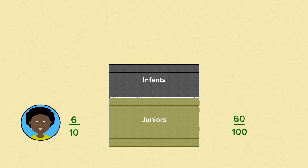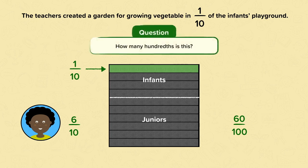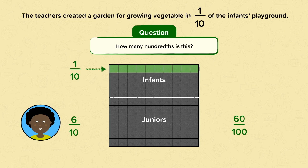Now let's have a look at another problem. The teachers created a garden for growing vegetables in one tenth of the infants' playground. This tenth of the playground was used for growing vegetables — you need to work out how many hundredths this is. Pause the video and have a go. Well done if you knew that one tenth is the same as ten hundredths.